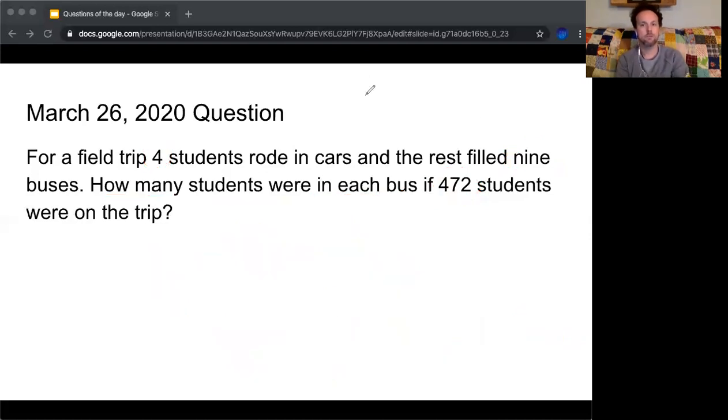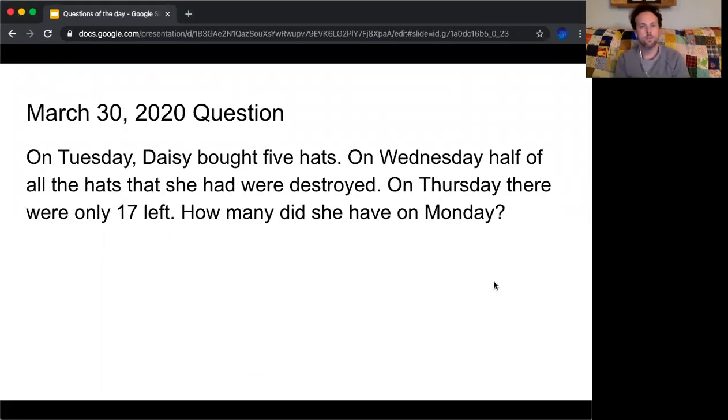All right. Now on to today's question, like always. So for today, we're going to be talking about Daisy. On Tuesday, Daisy bought five hats. On Wednesday, half of all the hats that she had were destroyed. On Thursday, there were only 17 left. So how many did she have on Monday?